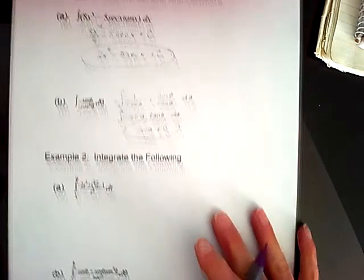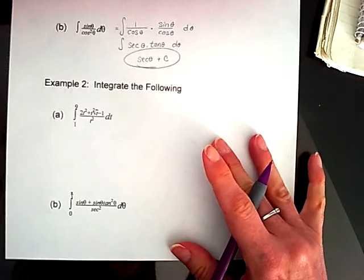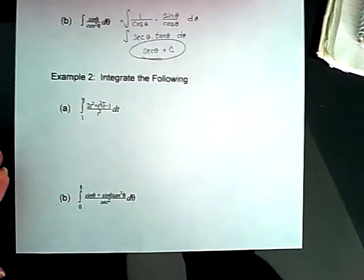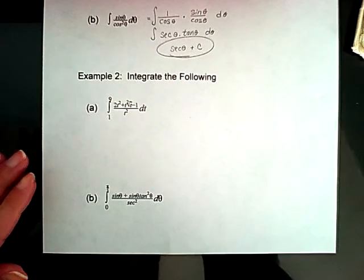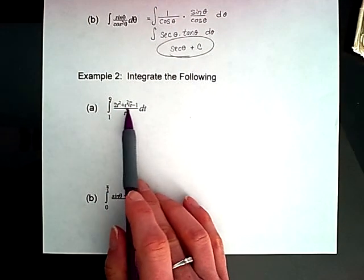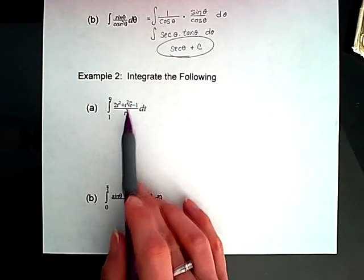For example 2, you can see two definite integral examples. These are a little bit more complicated. You can see a polynomial on top because I have a radical function that I'm going to have to simplify.